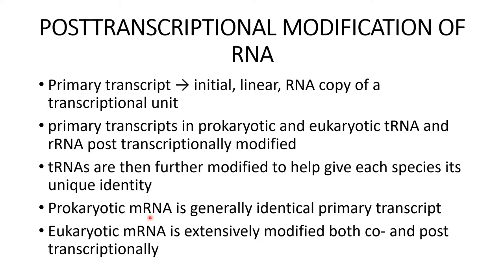The prokaryotic messenger RNA is generally identical — the nascent messenger RNA and the functional messenger RNA are the same. In prokaryotes there is no nuclear envelope, so transcription and translation occur side by side. In eukaryotes, messenger RNA is first formed, further processed, and then enters the cytosol where the translational machinery gives rise to the polypeptide chain. So messenger RNA in eukaryotes is modified.